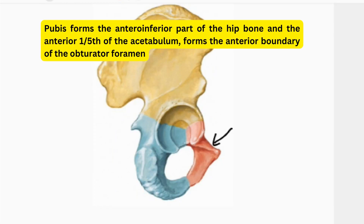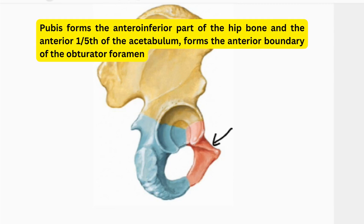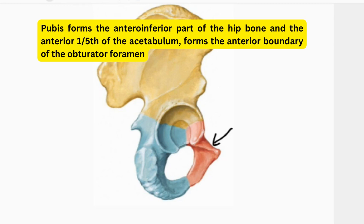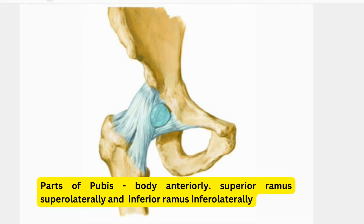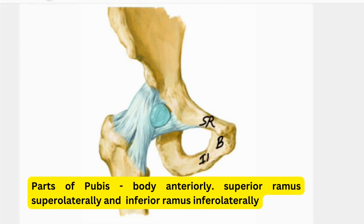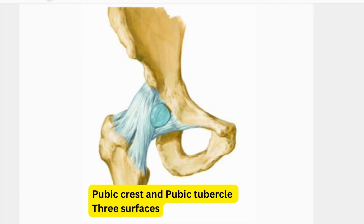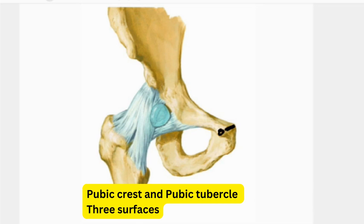The pubis forms the anteroinferior part of the hip bone and also forms the anterior one-fifth of the acetabulum. Parts of the pubis include the body, the superior ramus, and the inferior ramus. The superior border of the pubis is called the pubic crest. There is also a small bony projection known as the pubic tubercle.